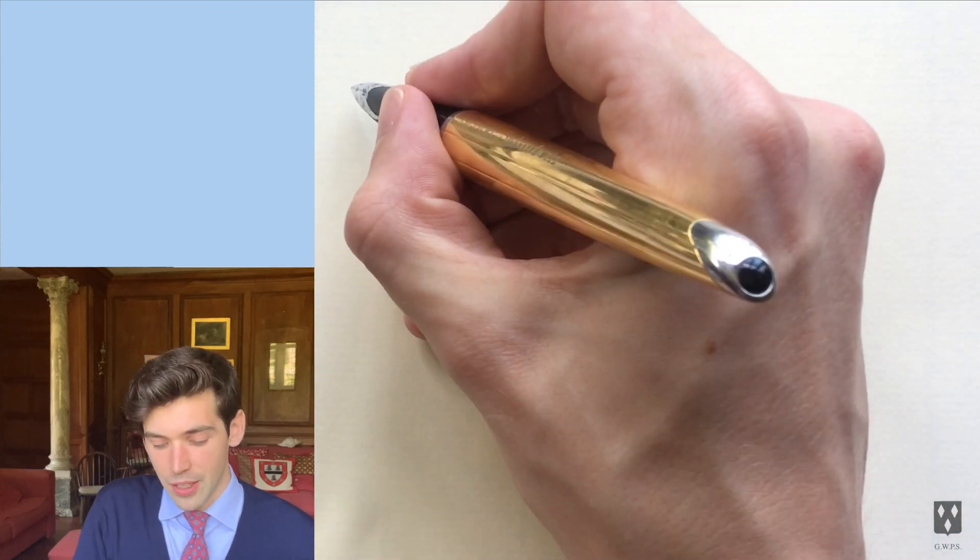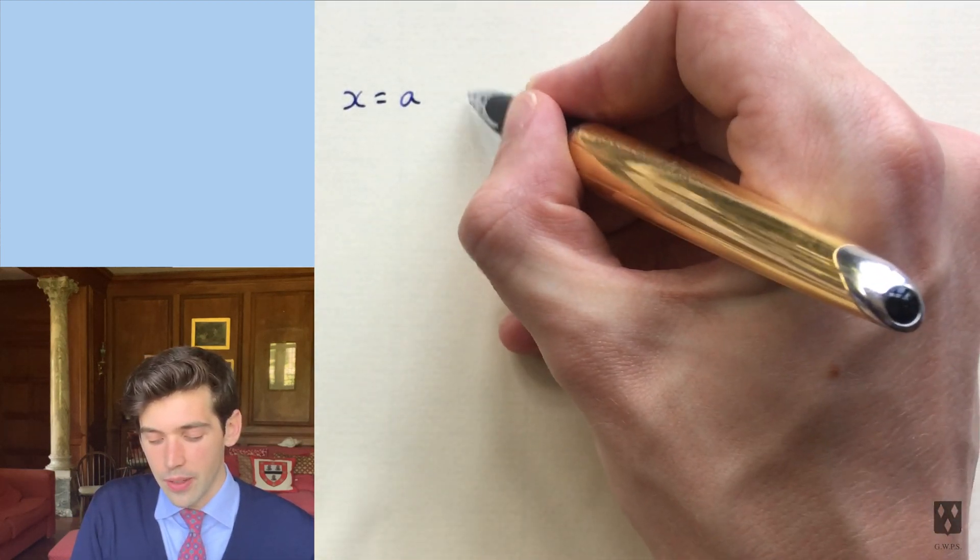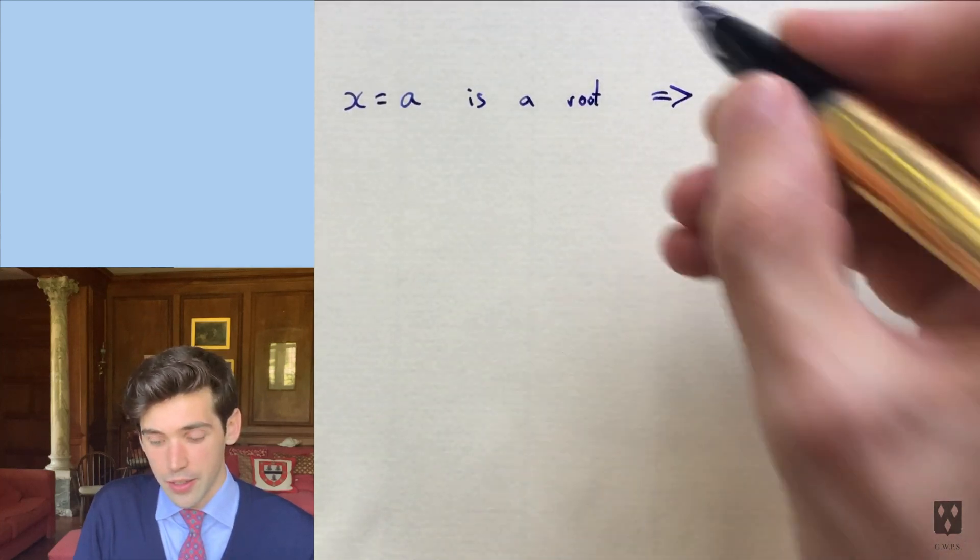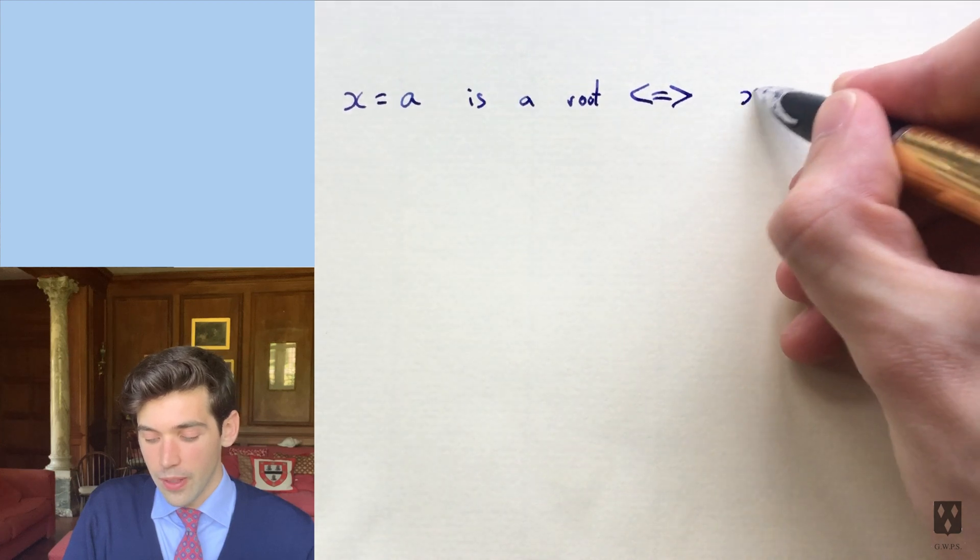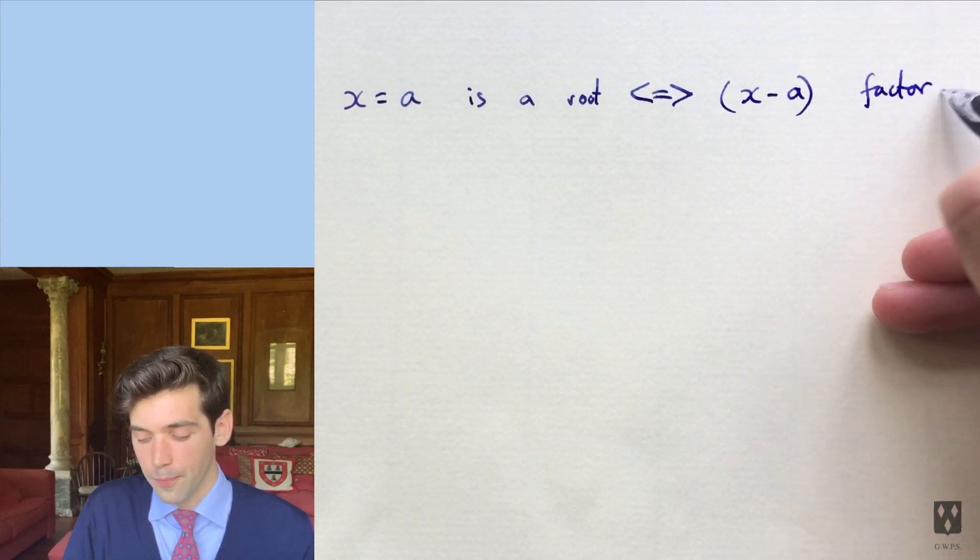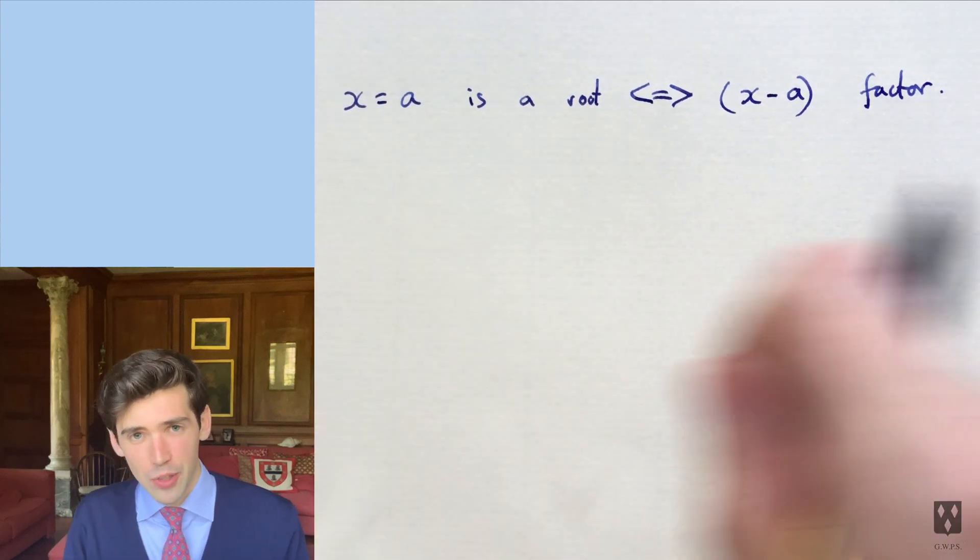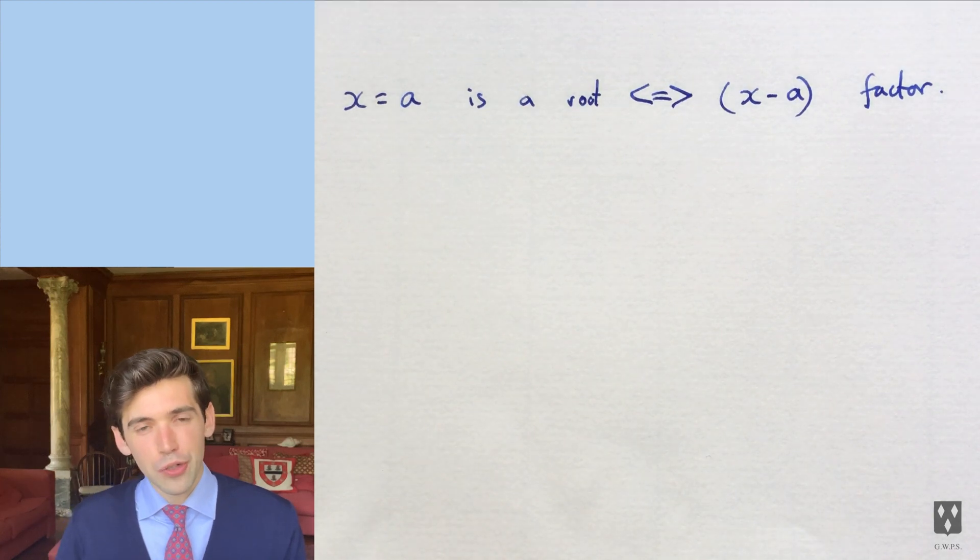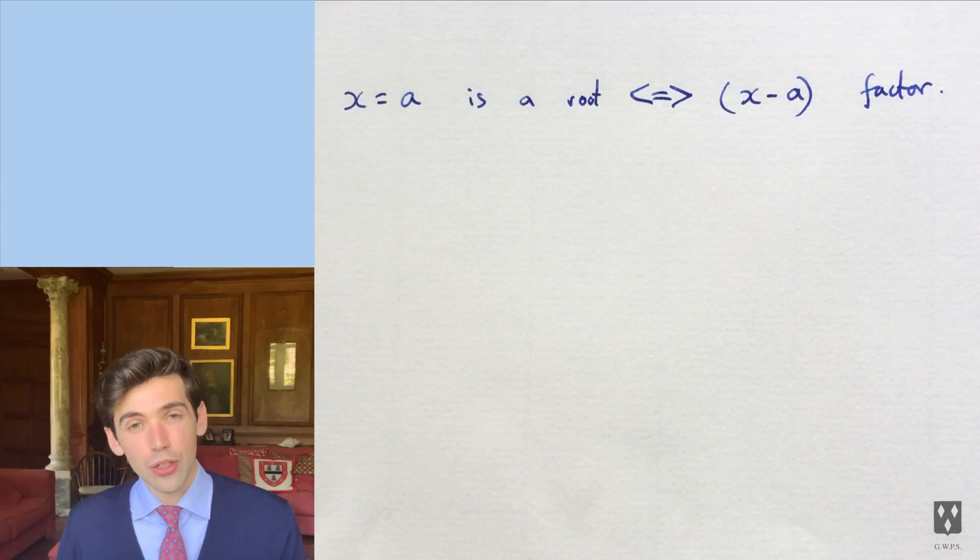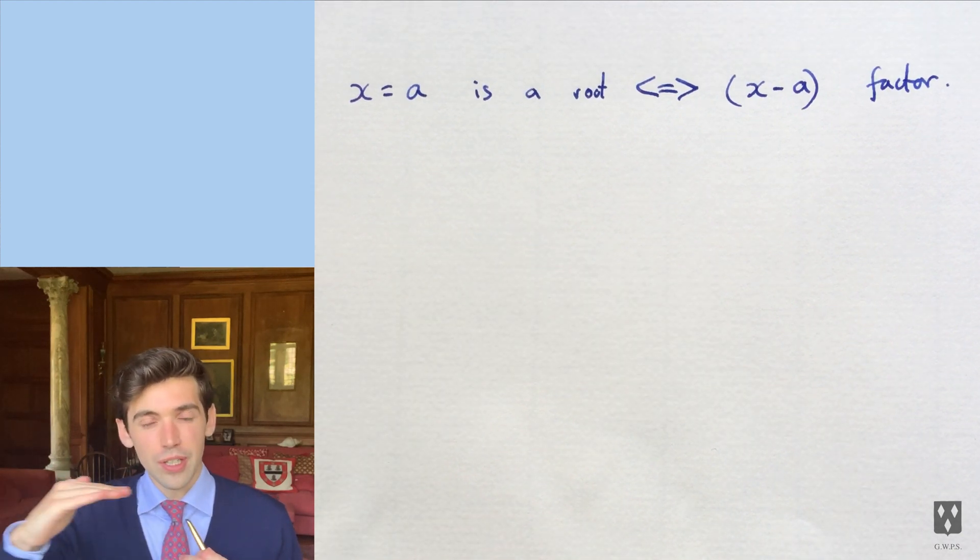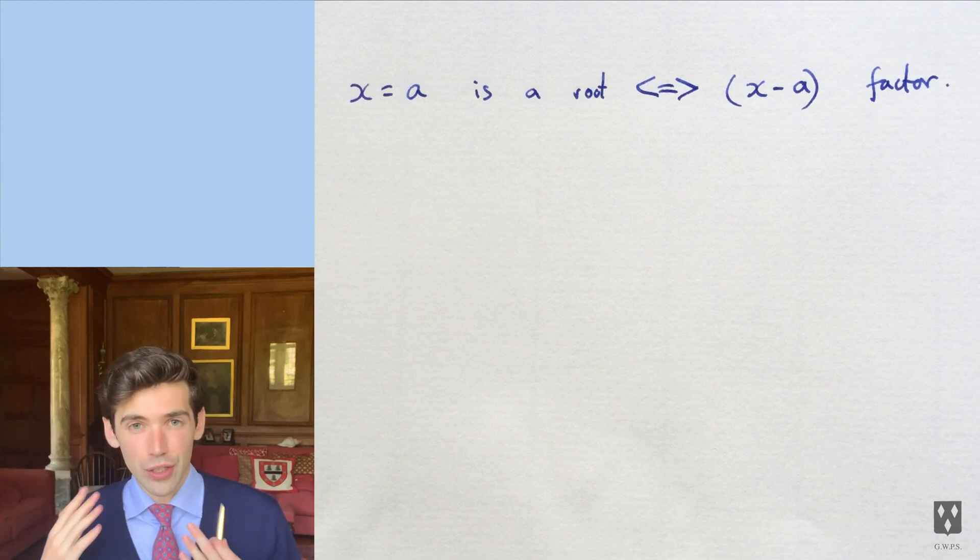So we could write this as if x equals a is a root, that implies and is implied by x minus a is a factor. And that basically sums up what the factor theorem tells you. And the other thing to remember is that if a is a root, when you substitute that into the expression, you should get 0 as your answer. After all, a root is where your function or expression crosses the x-axis, which is where the value is 0.